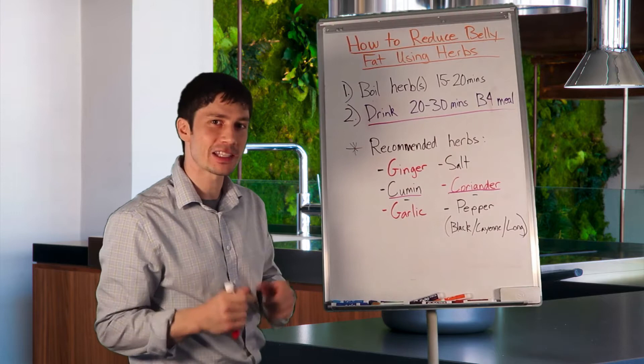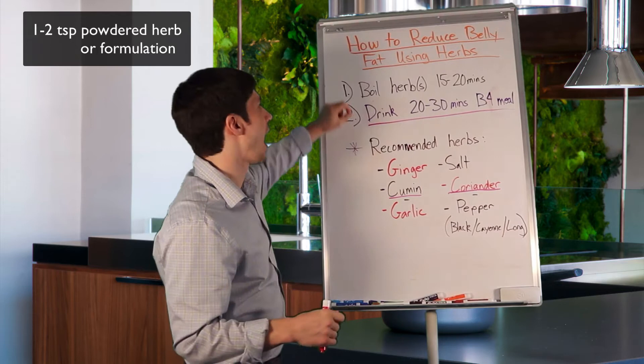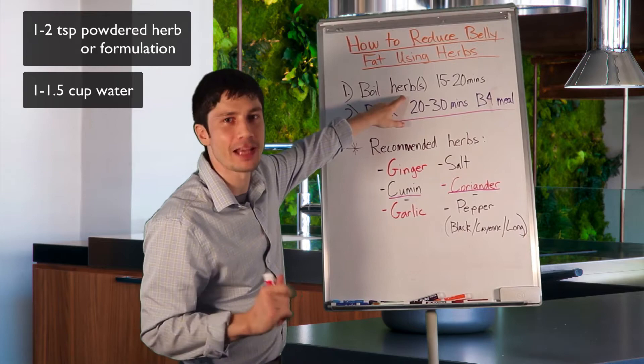The next thing you're going to do is take one to two teaspoons of a powder of each of these herbs, or one of these herbs. You can just pick one of them, that's perfectly fine. One to two teaspoons, add it to one to one and a half cups of water, and boil it for 15 to 20 minutes. Then, you will drink it. You can drink it right on, or you can strain it first, that's fine too.